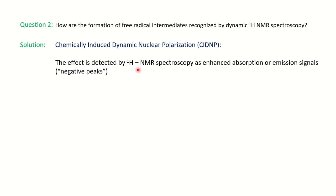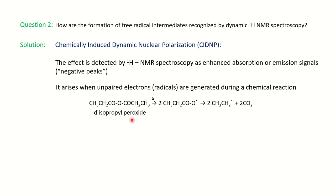The effect is detected by proton NMR spectroscopy as enhanced absorption or emission signals, that is negative peaks. So if you look at the CIDNP spectrum, then here along with the positive peaks which is above the plane, you will get the negative peaks also which is below the plane. So if you are getting the negative peaks, it is indicating that the mechanism going through the free radical intermediates. So basically the same statement is mentioned here.